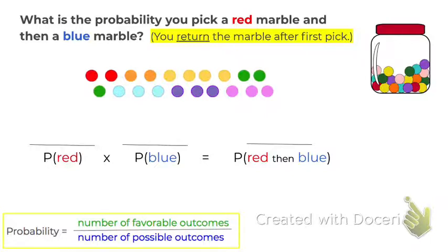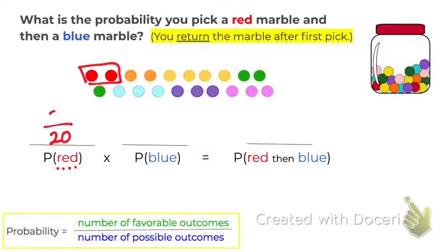The probability is the number of favorable outcomes divided by the total number of possible outcomes. So if we dump out our marbles and count how many there are, that is the number of possible outcomes. In this case there are 20 marbles, so that goes in our denominator. And how many of those are favorable if we're calculating the probability of picking a red? Well, there's just 2 red, so it's 2. So the probability of picking a red marble is 2 out of 20.